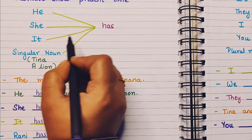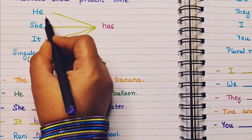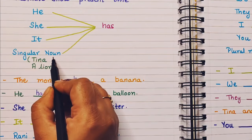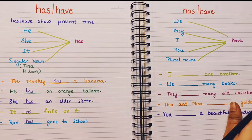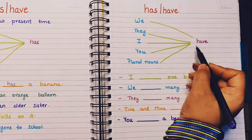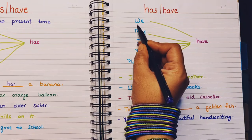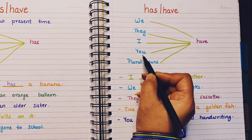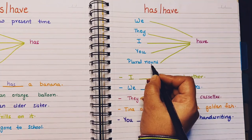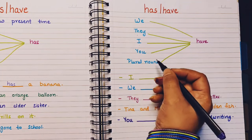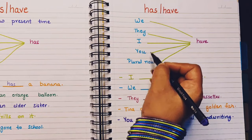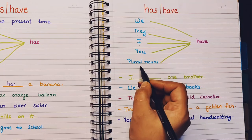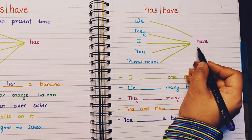So the words along with which we use has are: he, she, it, or any singular noun. Now let's see the usage of have. Have is used when we have we, they, I, you, or any plural nouns in the sentence. When the sentence begins with we, they, I, you, or any plural noun, then we use have with them.